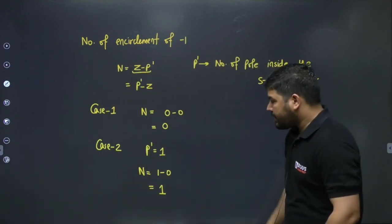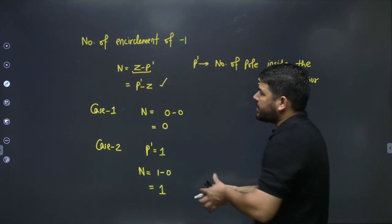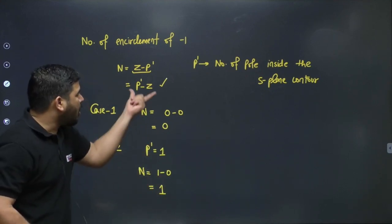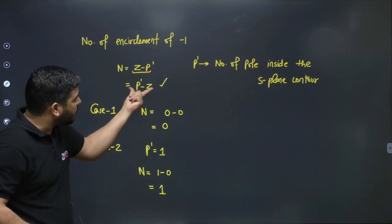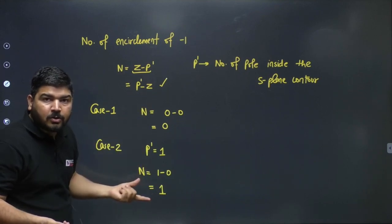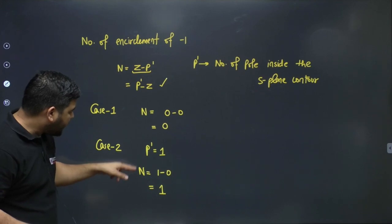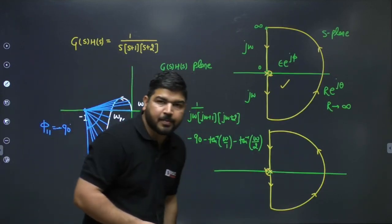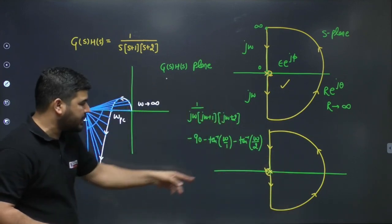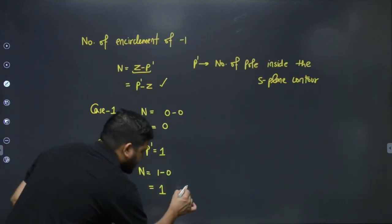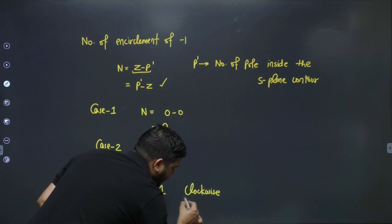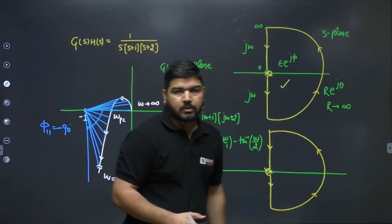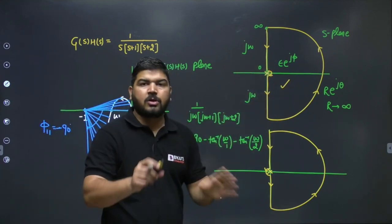In Case 2 (contour includes the origin pole): P' = 1 pole inside the contour. Using N = P' − Z = 1 − 0 = 1. Since N came from the P' formula, the direction of encirclement is opposite to the s-plane contour direction. Since the s-plane contour is anti-clockwise, the encirclement of minus one is one clockwise encirclement.